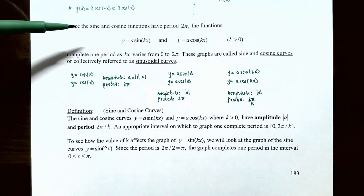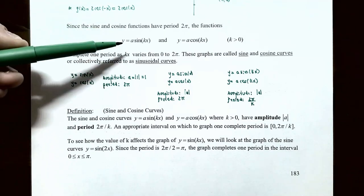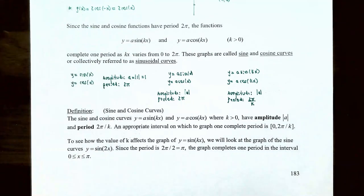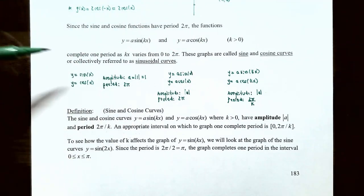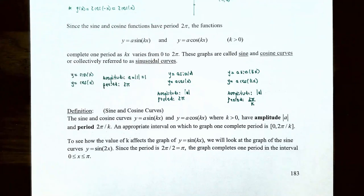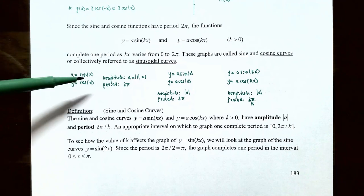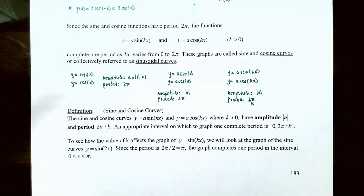Since the sine and cosine functions have a period of 2π radians, the functions y = a·sin(kx) and y = a·cos(kx), where k is a positive number, complete one period as kx varies between 0 and 2π. These graphs are called the sine and cosine curves, or collectively sinusoidal curves. Both y = sin(x) and y = cos(x) have an amplitude of 1 and a period of 2π.